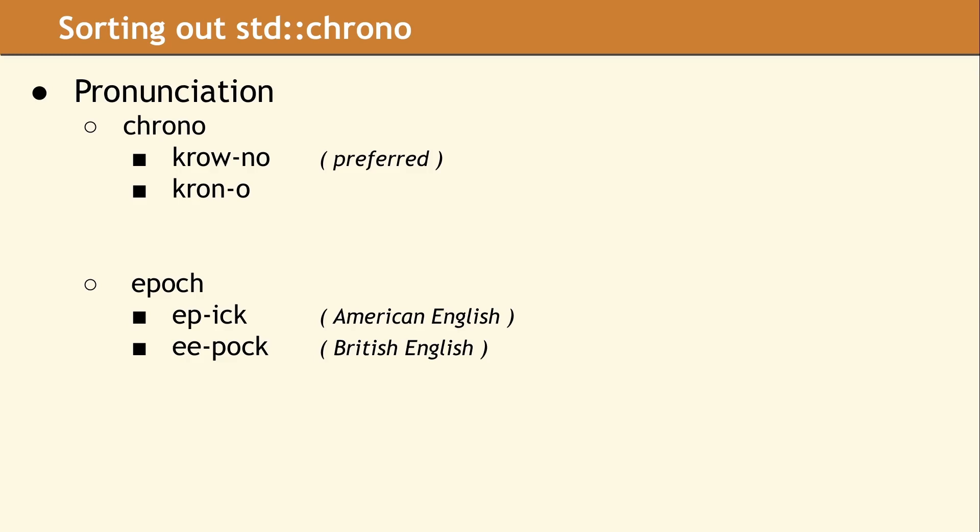Before getting into the C++ details, we believe it's important to explain how to pronounce two different words. The first is the name Chrono itself. There are a few different ways we have heard developers say this name. Chrono is a prefix in English used to create a compound word. It comes from the Greek word chronos, which means time. You may hear some developers say chrono, however we believe this is inaccurate. We're going to use the root origin and use the Greek pronunciation, which would be chrono.